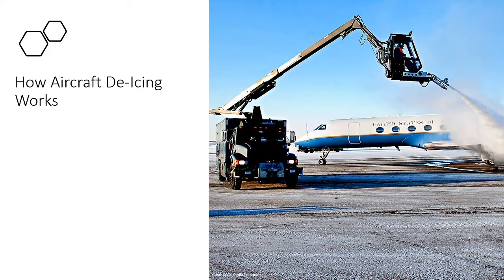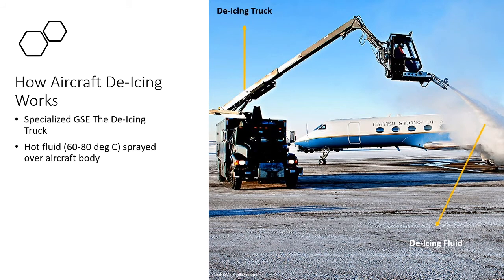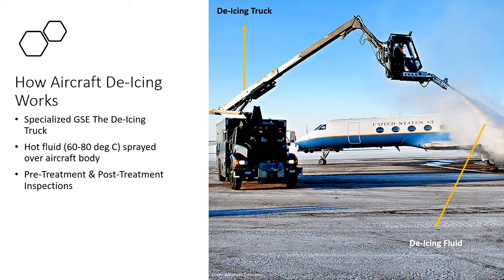Aircraft de-icing is simple to understand. Before an aircraft takes off, a specialized ground support equipment called a de-icing truck is used for spraying a hot fluid over the aircraft's body. This fluid melts and removes the layer of ice formed over the aircraft. Pre-treatment and post-treatment inspections are carried out to make sure that the aircraft is safe to fly.